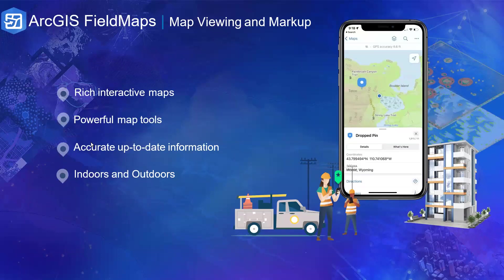Before the demo, let's look at three key capabilities within this application. The first is map view and markup. Map viewing and markup allows you to know what's around you and where you are — which is critical. If you're going to a place you're not familiar with, which may also be risky, you need to know your location, what routes to follow, and which places to avoid.